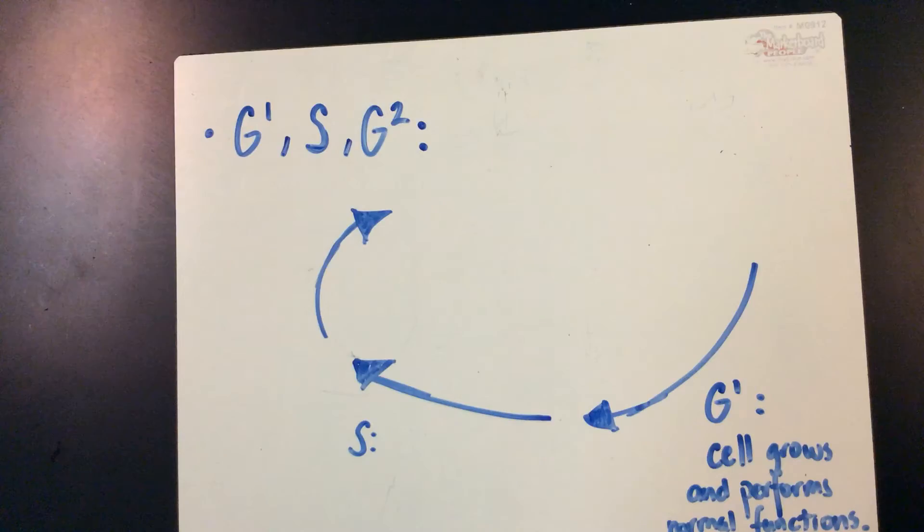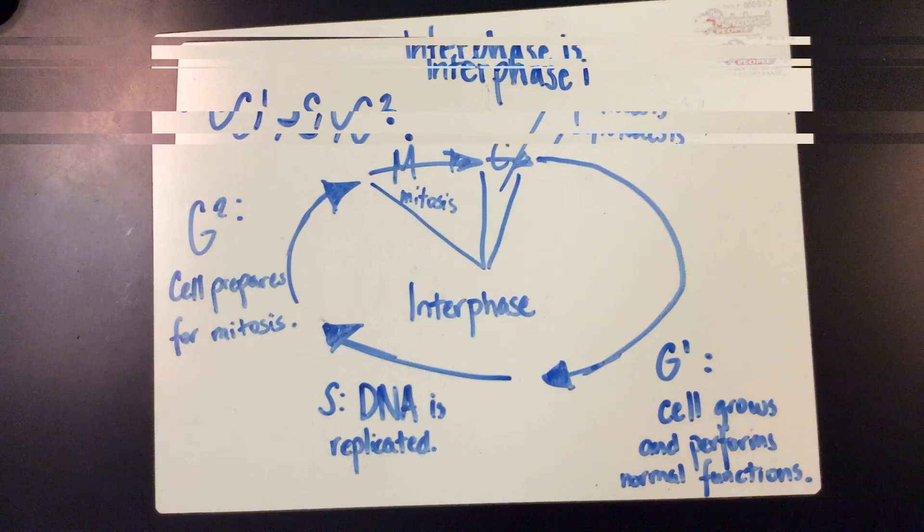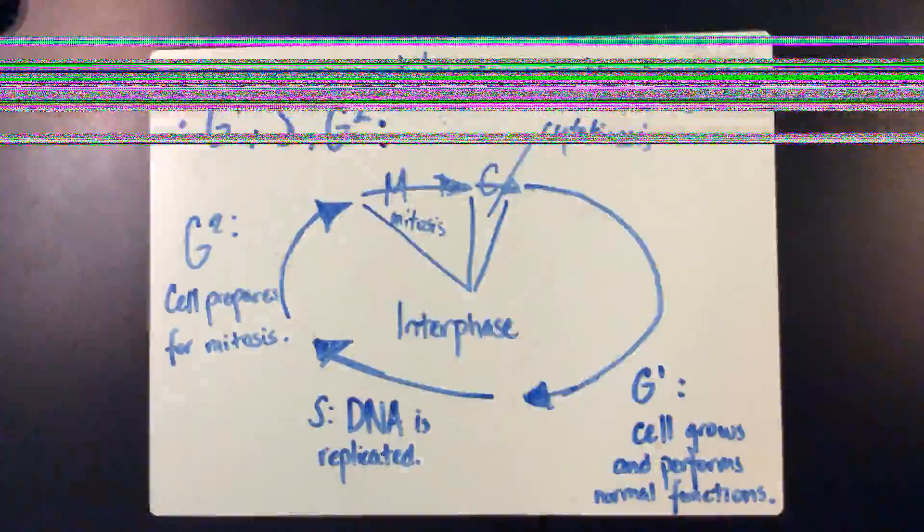There are G1, S, and G2 phases. G1: cell grows and performs normal functions. S: DNA is replicated. G2: cell prepares for mitosis. Interphase is the longest part of the cell cycle.